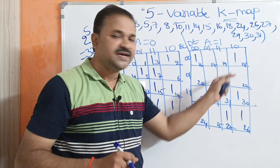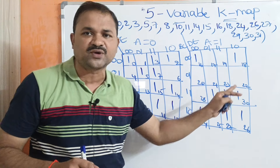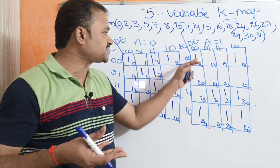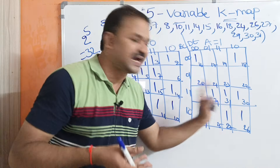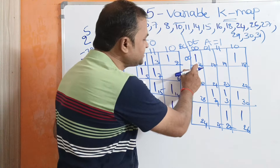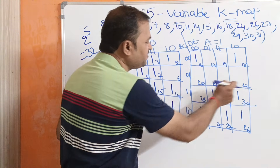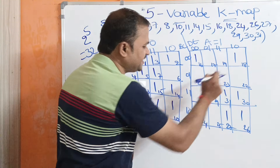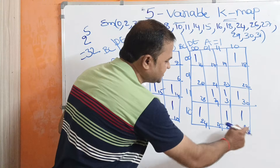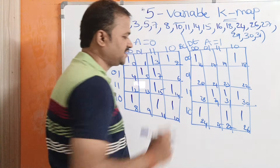Likewise, the second 4-variable Karnaugh map also contains 16 minterms from 16 to 31. So the cells represent minterms 16 through 31 sequentially.